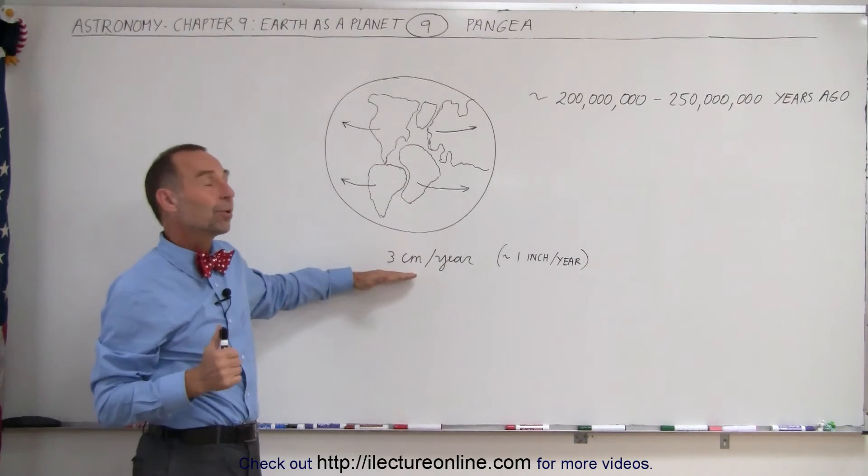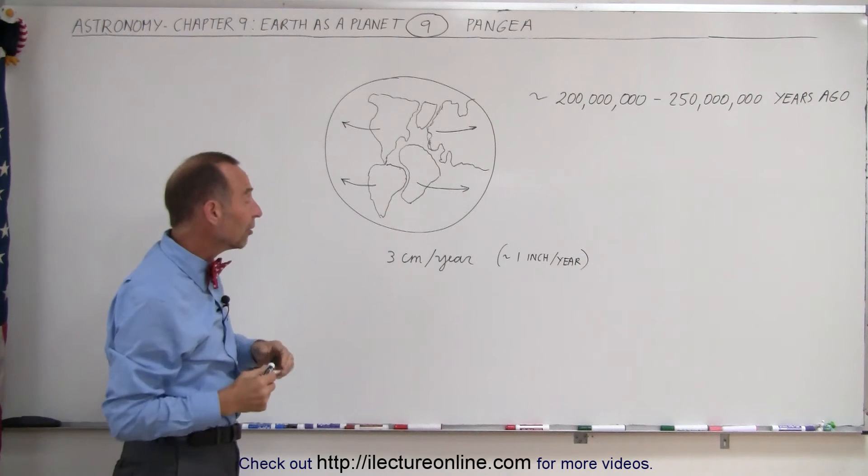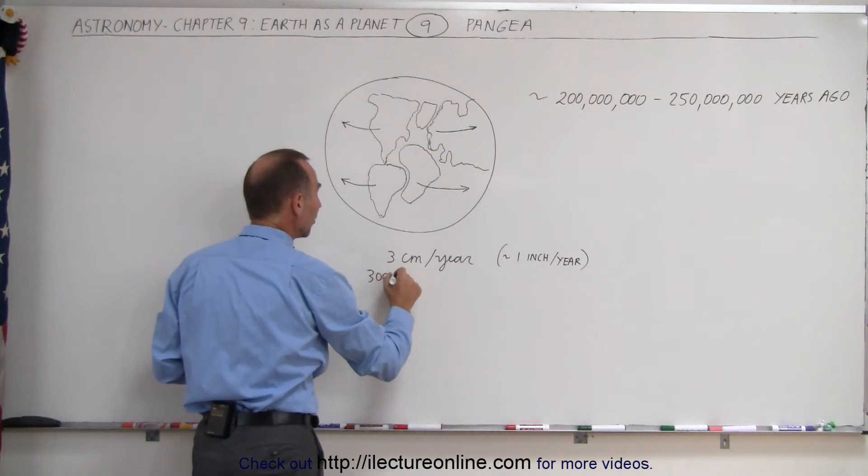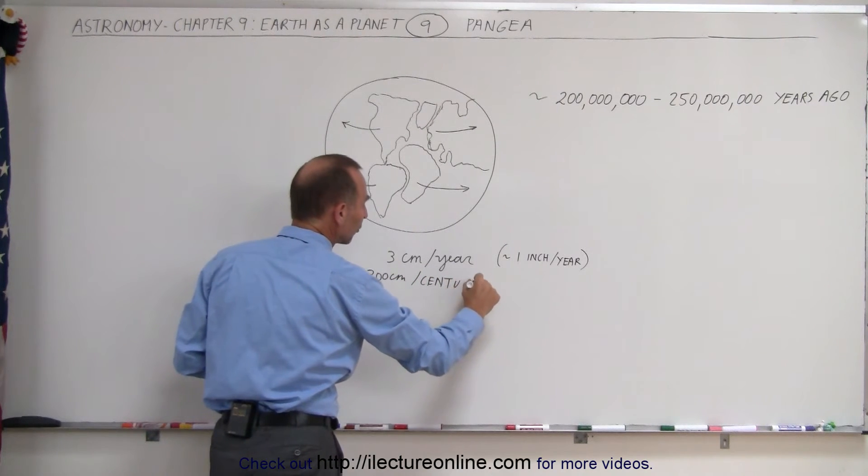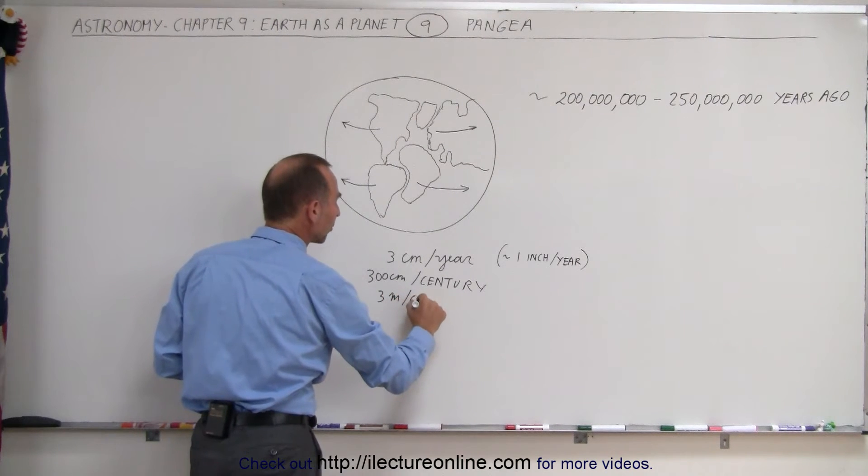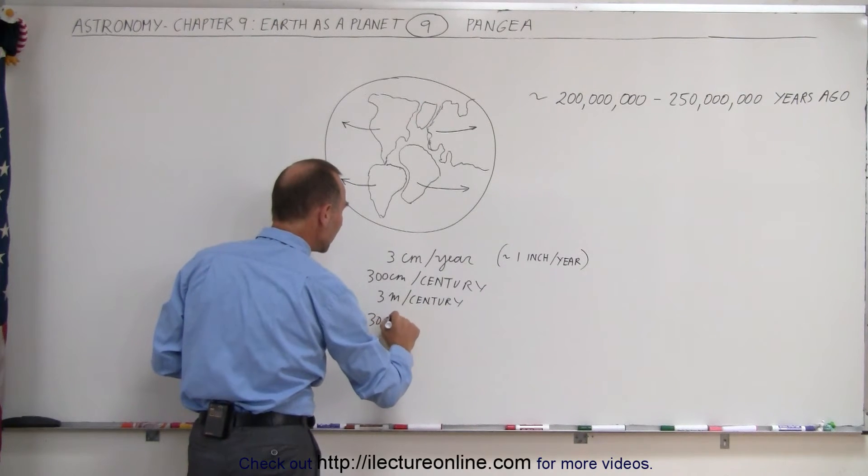Three centimeters per year, can that account for the size of the Atlantic Ocean today? It turns out it does, because three centimeters per year means 300 centimeters per century. And of course, 300 centimeters, that is actually three meters per century. That means over the period of a thousand years, that would be 30 meters.